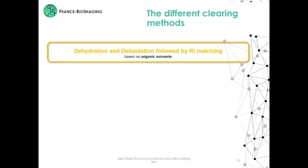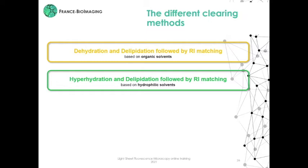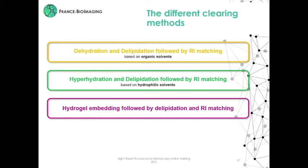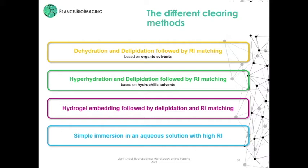What are the different clearing methods? We can define four different groups. The first is the dehydration and delipidation method followed by refractive index matching, based on organic solvents. The second family is the hyperhydration and delipidation method followed by RI matching, based on hydrophilic solvents. The third is based on hydrogel embedding followed by delipidation and RI matching. And the last one is based on sample immersion in an aqueous solution with RI matching.